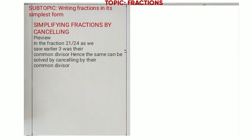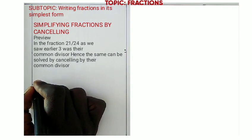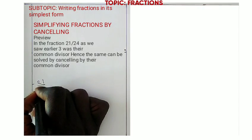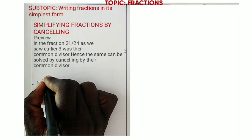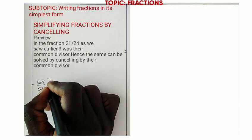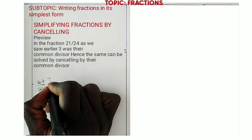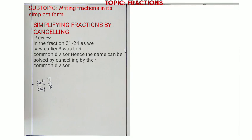We can just cancel by the common divisor. We can say 21/24, we cancel 21 by 3 to get 7, and then we cancel 24 by 3 to get 8. We still get the same answer. When we cancel by 3 in each case, we say it is simplified by cancelling. Let's have another small exercise.